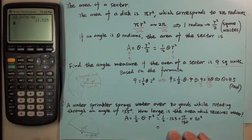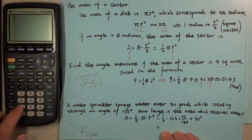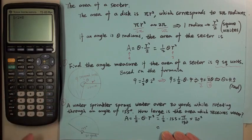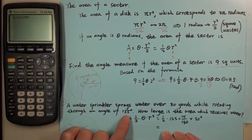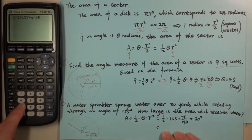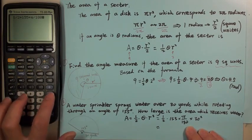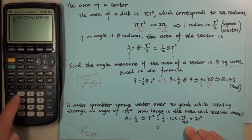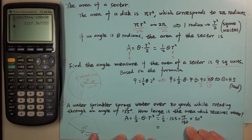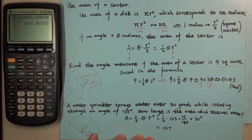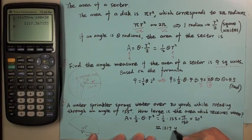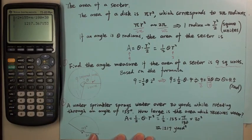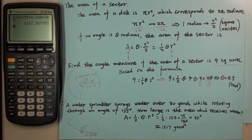On the calculator: enter one divided by two, times 155, times π, divided by 180, times 30 squared. Hit enter and you get approximately 1217 square yards. So the final answer is approximately 1217 square yards. Please review this lecture — I'll see you next time.